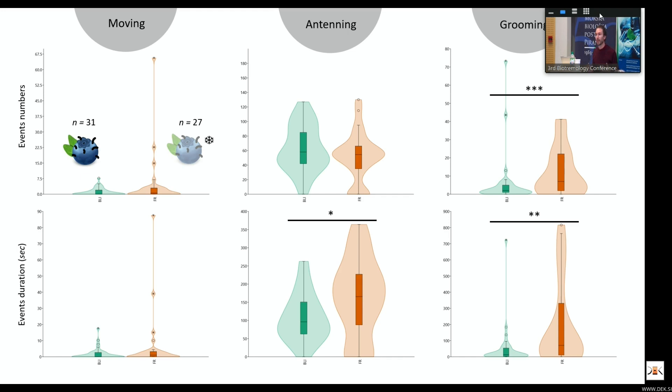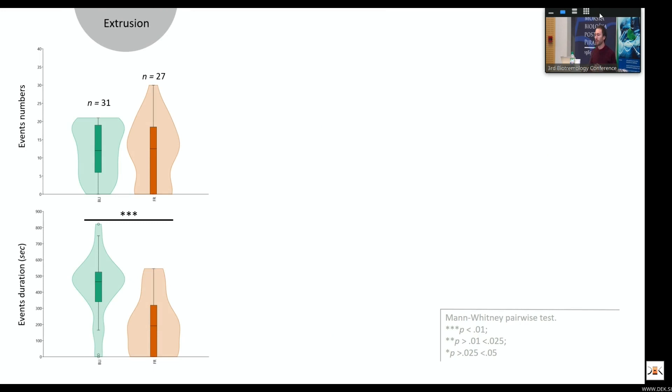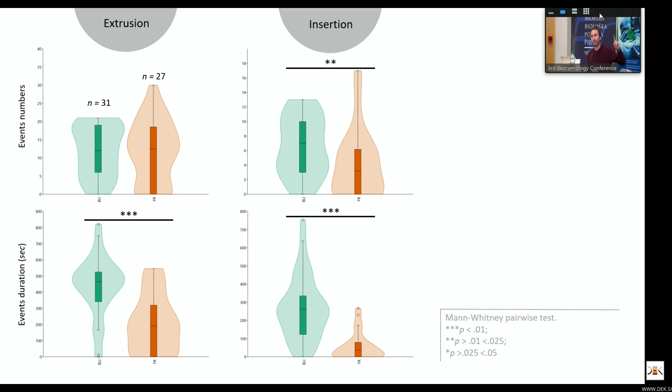The most interesting part is mainly the behavior on their oviposition. If we look at oviposition in terms of extrusion, the number of extrusions, there's no statistical difference. But the duration of them, there's much more duration of events in infested blueberries when the blueberries were filled with alive larvae that were moving and alive. We have more insertions in terms of number and also longer insertions when the larvae of the Drosophila were still alive in the fruit.